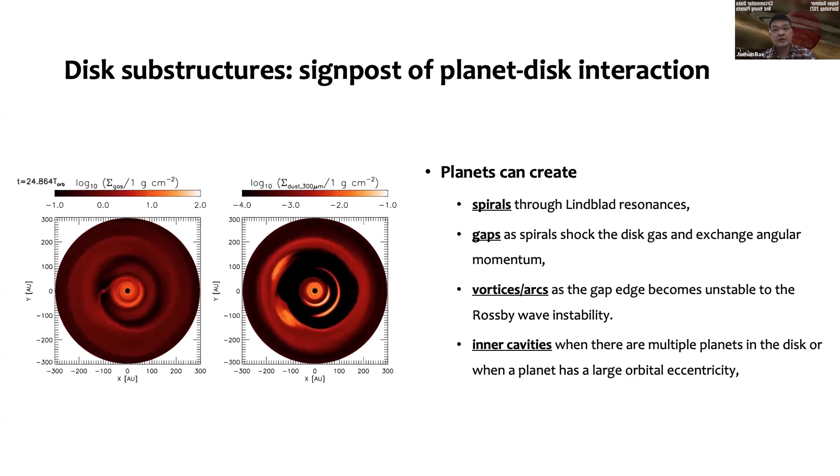What planets can do—as you can see in the simulation where I'm presenting a gas disk, gas surface distribution, and also dust distribution with particle size of 300 micrometers—there's one giant planet in the disk. You can see that planets can create spirals through Lindblad resonance. As those spirals shock the disk gas, they can exchange angular momentum with the disk gas, so they open a gap around the planets.